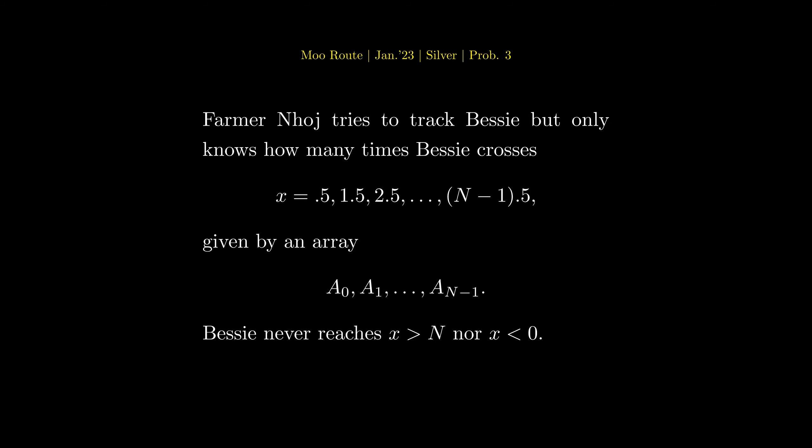Farmer Nhoj tries to track Bessie but only knows how many times Bessie crosses x equals 0.5, 1.5, 2.5, etc., given by an array. Bessie never reaches beyond N nor left of zero.